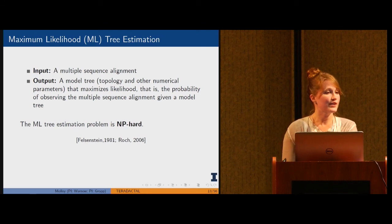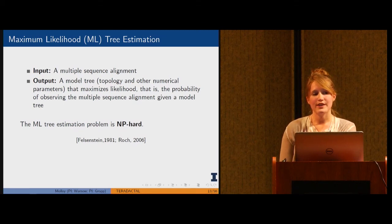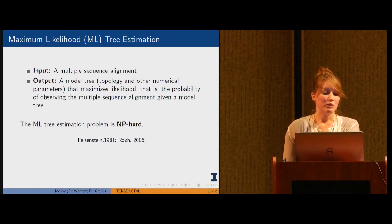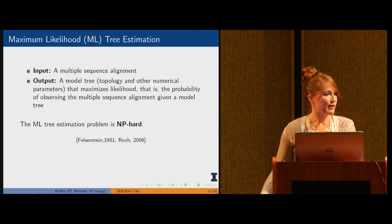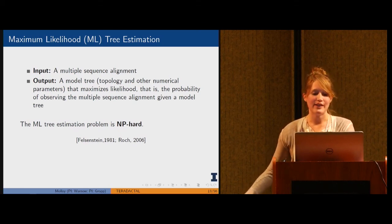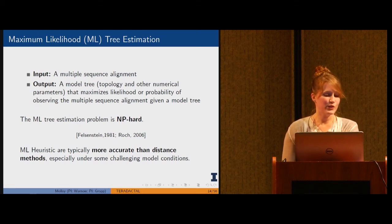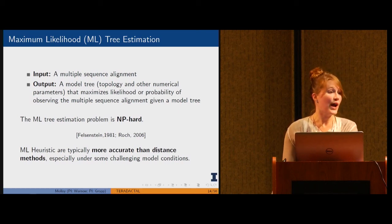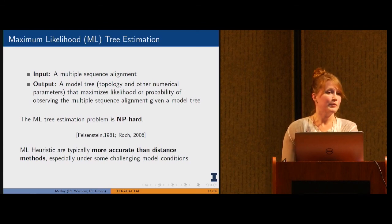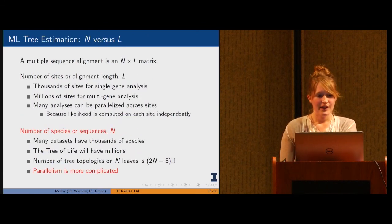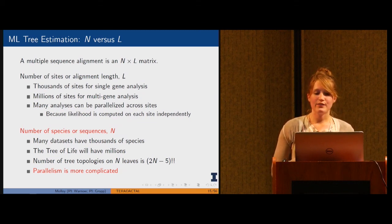Really one of the gold standards in phylogeny estimation is maximum likelihood methods. For these types of methods, the input is a multiple sequence alignment and the output is a model tree which maximizes the probability that you observe that multiple sequence alignment given that model tree. It's important to note that the ML tree estimation problem is NP hard, but regardless, the heuristic methods for solving this problem are still typically more accurate than distance methods, especially under some challenging model conditions.